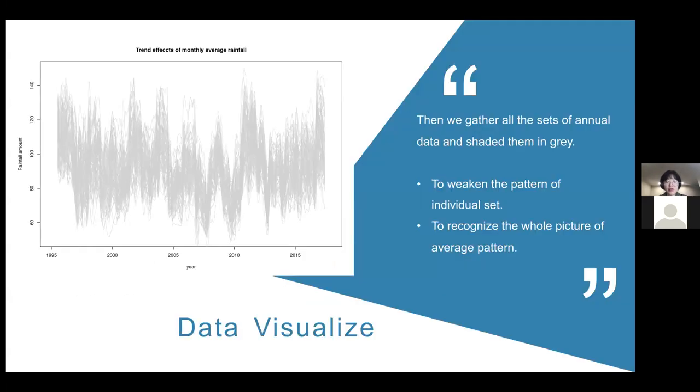Besides using colorful lines to see the details for individual year data, sometimes we may need to see the overall shape for a bunch of annual data. Then we can use gray shading to weaken the effects of individual data and put more attention on the big picture, which here we can easily recognize the whole pattern of our monthly rainfall data.